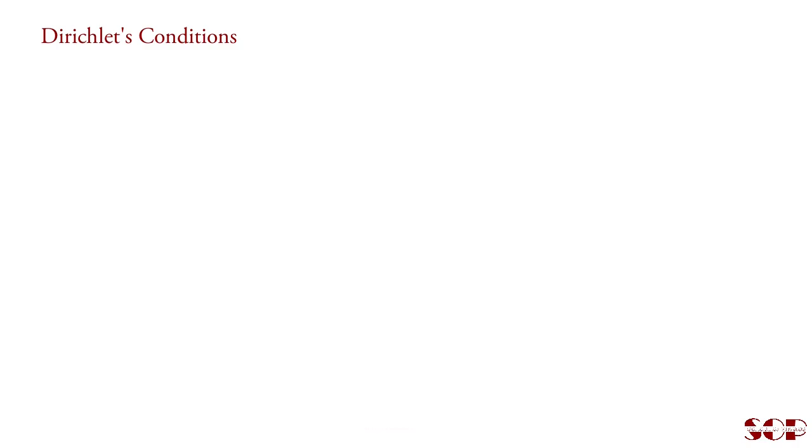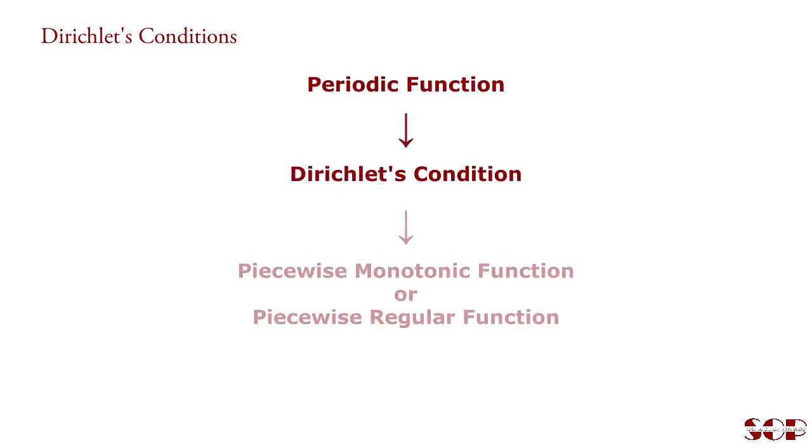So in conclusion, I say that a periodic function that fulfills the Dirichlet's conditions is called piecewise monotonic or piecewise regular function. Hence, we say that a piecewise monotonic periodic function is expandable in Fourier series.